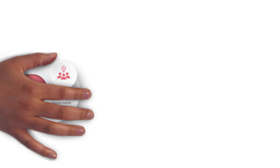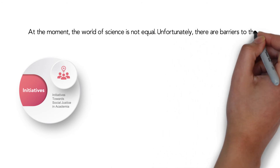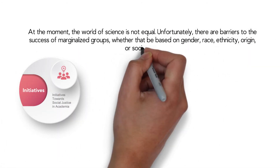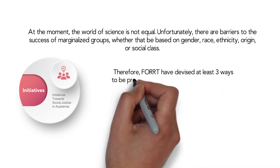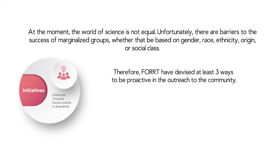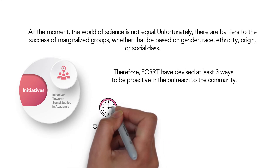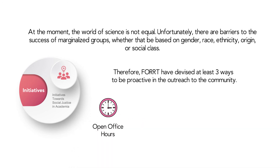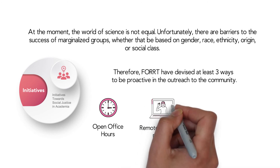A really important part of the website is FORT Initiatives. Unfortunately, the world of science is not equal, and there are barriers to the success of marginalised groups, whether that be based on gender, race, ethnicity, origin or social class. Therefore, FORT have devised at least three ways to be proactive in reaching out to the community. For example, at least once a month, the FORT community holds its office hours for anyone in the world wishing to learn, adopt and disseminate open and reproducible science principles, and it is also open to those with interest or questions about teaching these concepts. FORT also offers a remote mentorship programme in which people from underprivileged or underrepresented backgrounds can be paired with a mentor who will facilitate the adoption of open and reproducible science principles.